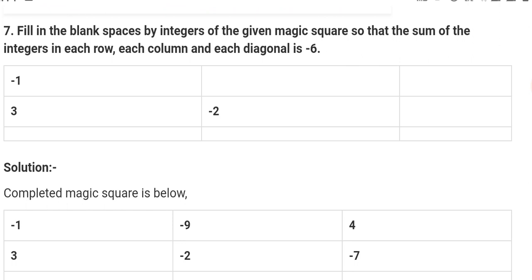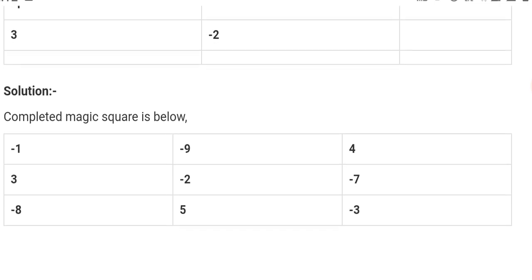Next, fill in the blank spaces by integers of the given magic square. So sum of the integers in each row, each column, and each diagonal is minus 6. So you have to solve this here. Each row, each column, what is the row? Let me tell you the row. This is row. This is column. And this is the diagonal. This is called the diagonal. So you have to fill in numbers and integers where sum is minus 6. So you can do it yourself. We have to tell you the answers. You have to do it yourself.